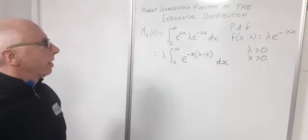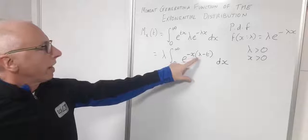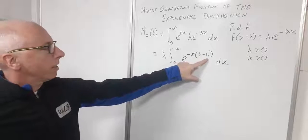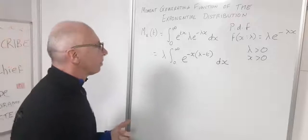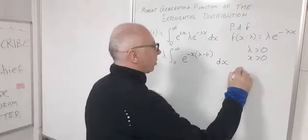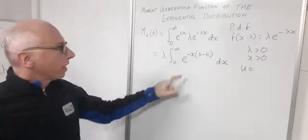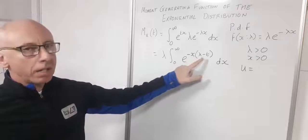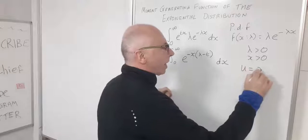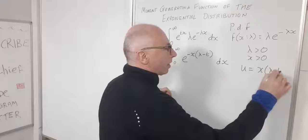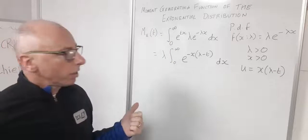We use a u-substitution to complete this integral. We let u = x(λ − t), keeping the negative sign separate, so u equals x times (λ − t).